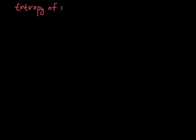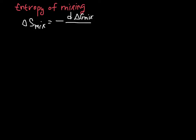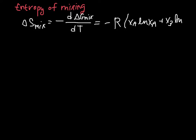Let's look at the entropy of mixing for an ideal solution. We know from the coefficient relationship that S is related to G as the negative of dG/dT. Taking this derivative, we end up with delta S mixing equal to negative R times (XA ln XA plus XB ln XB). Because XA and XB are less than 1, this term is always negative, and so delta S mixing is always positive.